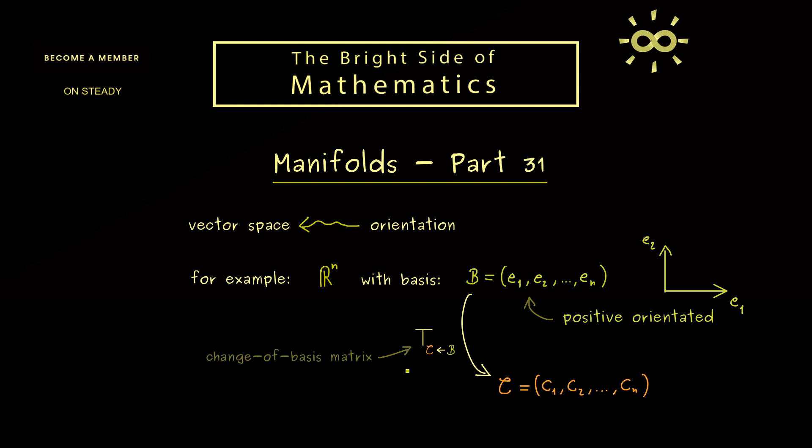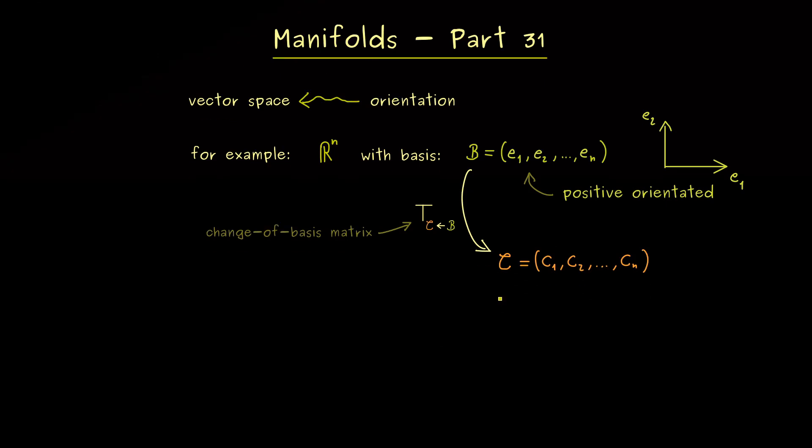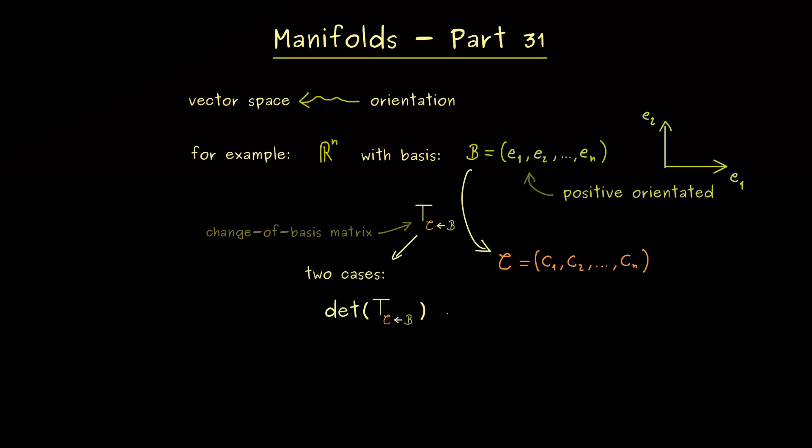Moreover, this is an invertible matrix because we can also go backwards, which means there are only two possibilities for the determinant of this matrix. Either the determinant is positive or it is negative. And depending on this sign,